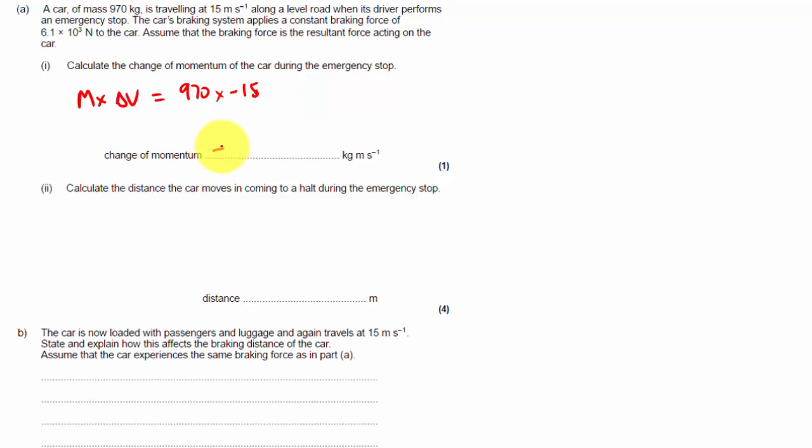And calculating this gives us a value of minus 14,550. OK, so part one, very easy, and that's why it's only worth one mark.